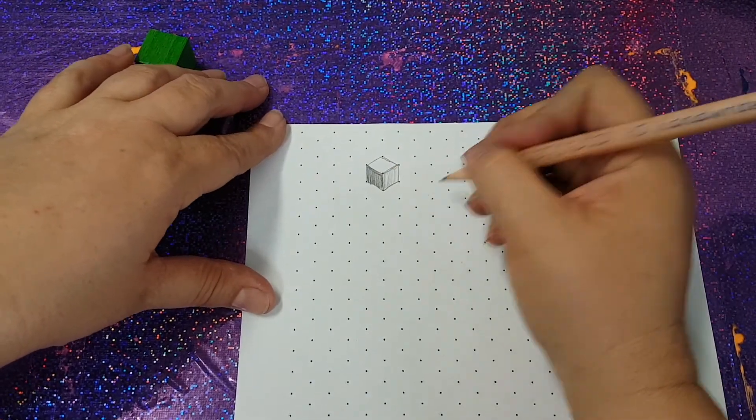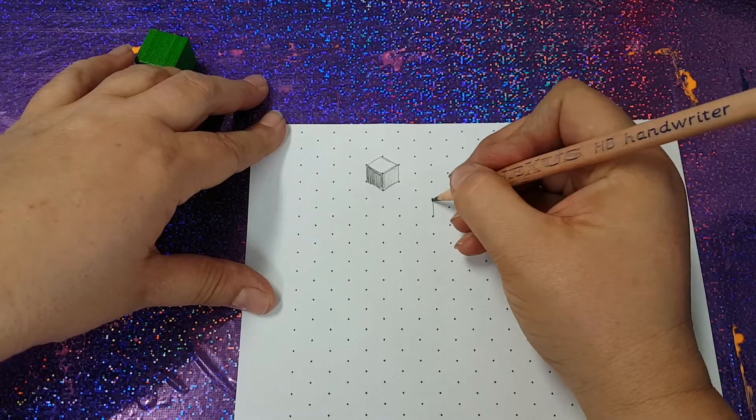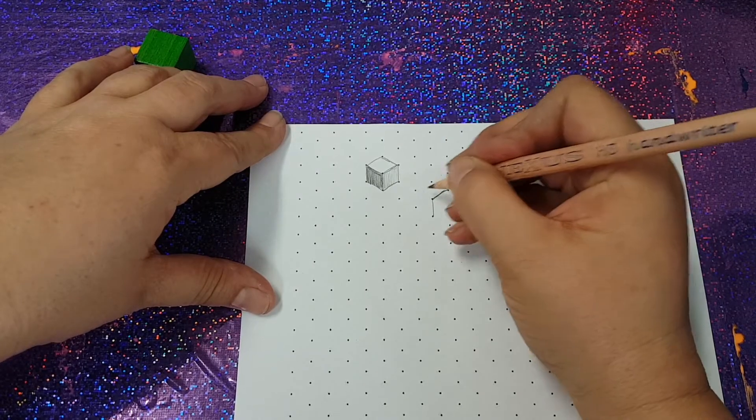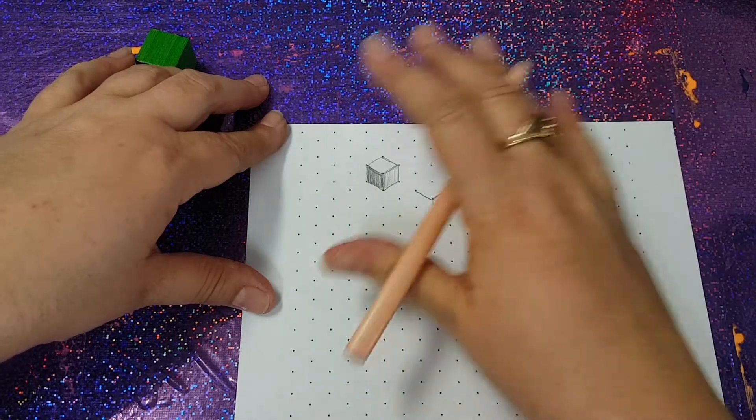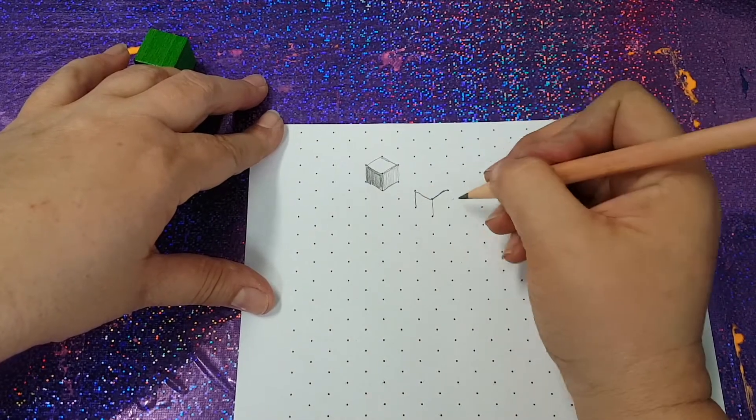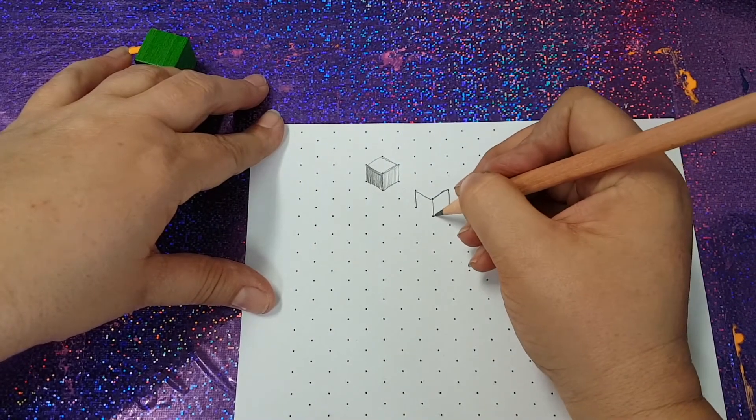And now we've got a really cool really 3D looking cube. Have a bit of a practice, move over a little bit and practice drawing some cubes really neatly. Try and stay up around the top of the page because we're going to use the bottom of the page for other things.